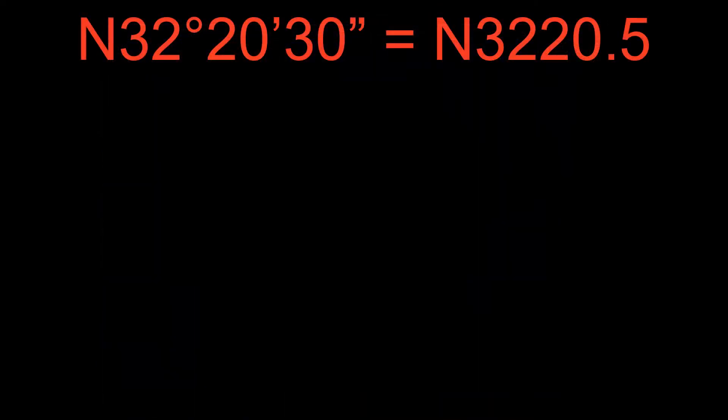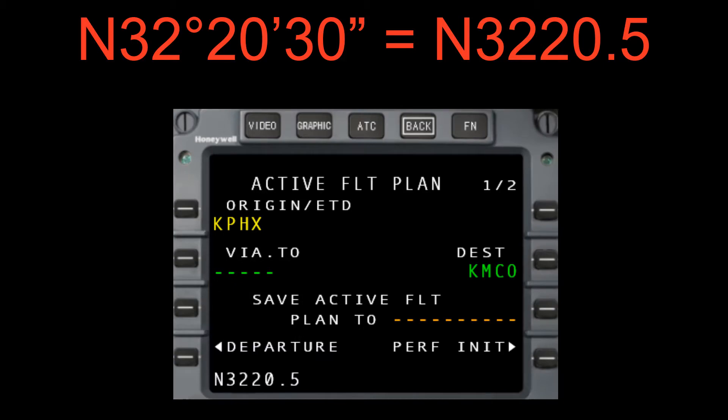It's worth pointing out that the FMS does not recognize seconds in the entry format, but minutes can be entered in tenths or hundredths by inserting them after a decimal. For example, north 32 degrees 20 minutes 30 seconds would be entered as N 32 20.5.